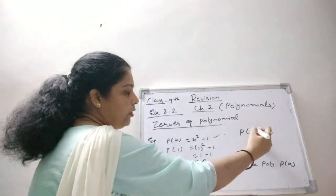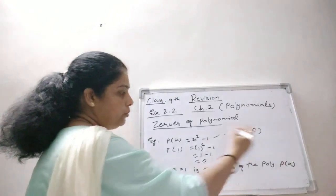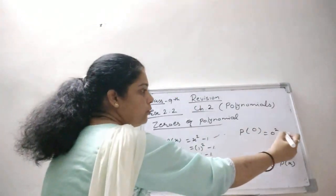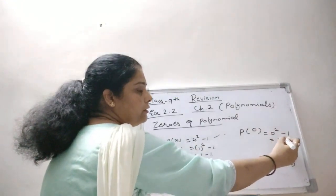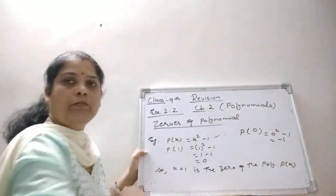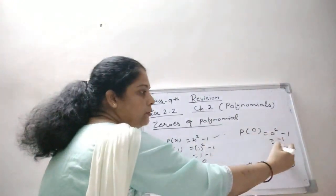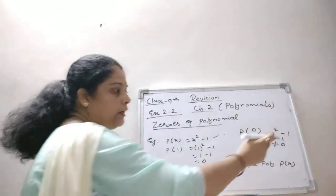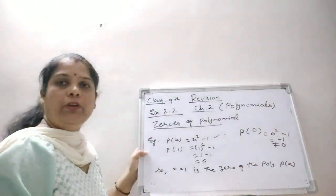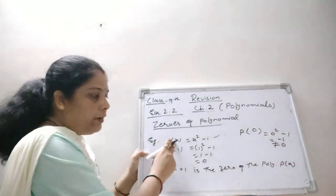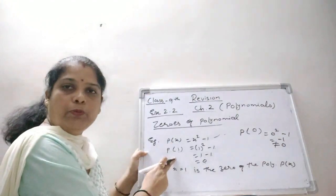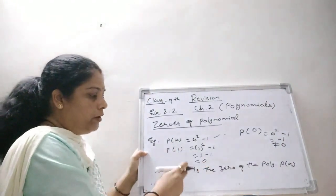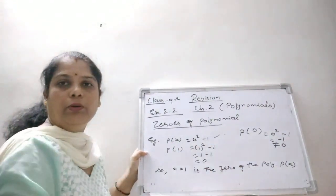If instead we put x = 0 in x² minus 1, we get 0² minus 1, which equals minus 1. The answer is not equal to 0, so x = 0 is not a zero of the polynomial. This means: whatever value of x we put in, if the answer is 0, then that value is called the zero of the polynomial.